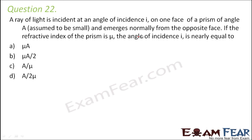Question number 22. A ray of light is incident at an angle of incidence I on one face of a prism of angle A, and emerges normally from the opposite face. If the refractive index of the prism is mu, the angle of incidence I is nearly equal to?